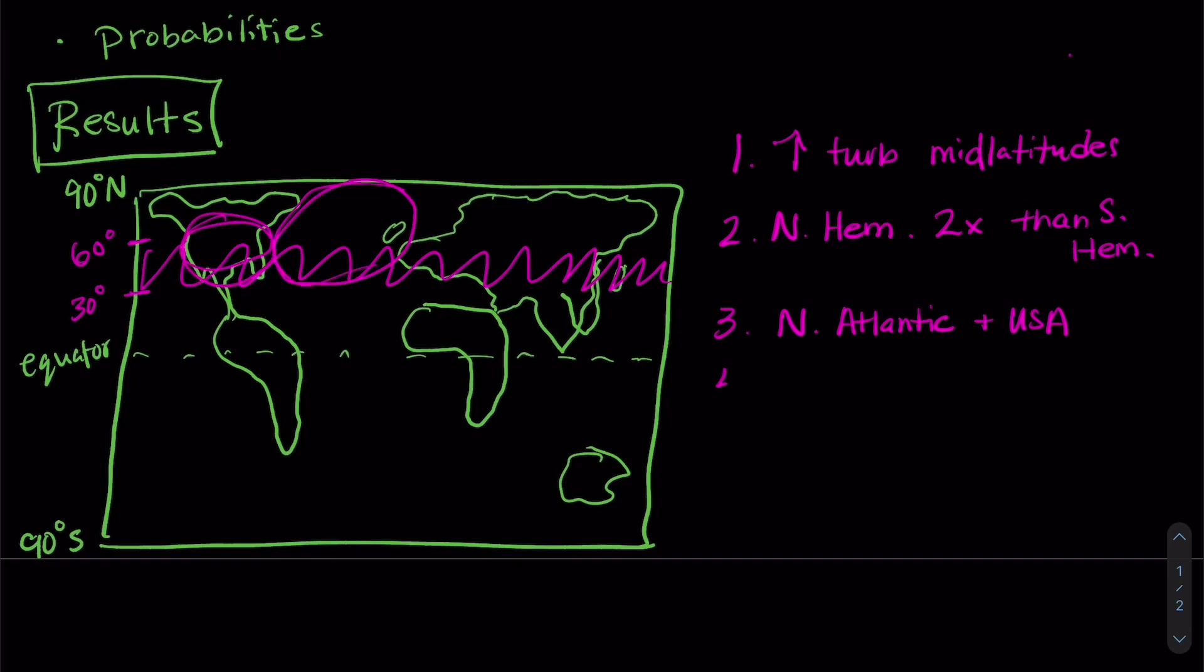They also found that in the autumn and winter there was a lot more turbulence than the spring and summer.